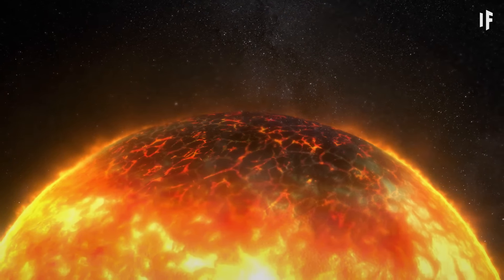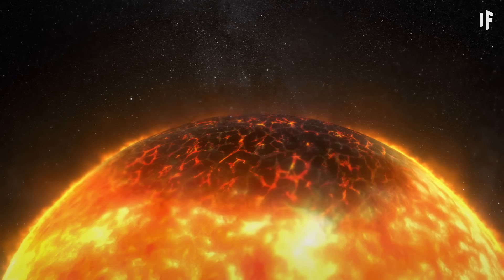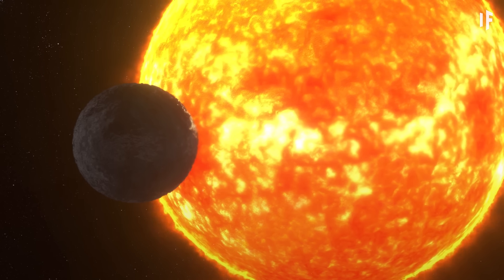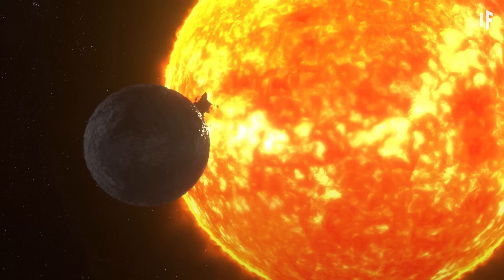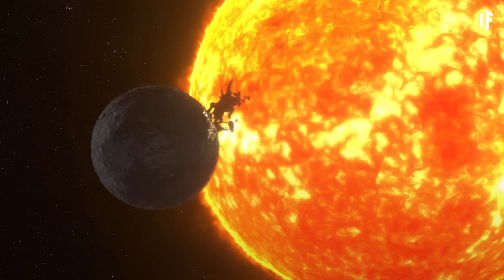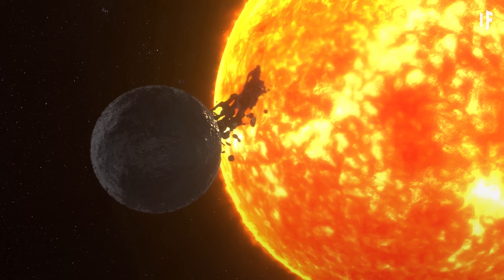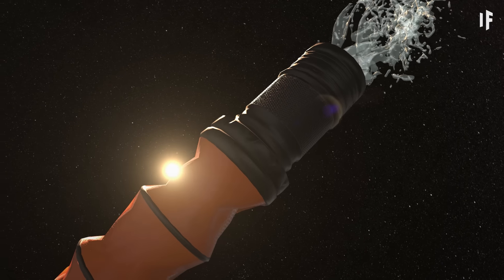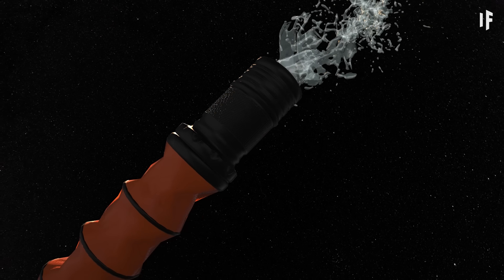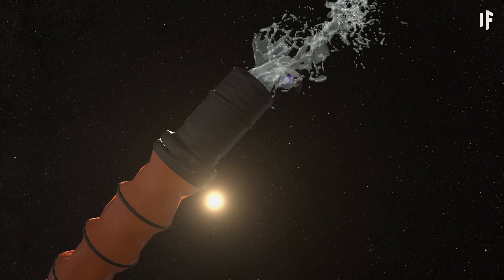But it wouldn't happen the way you might expect it to. If we were able to crash that water world into the Sun, the first problem would be the water freezing in space. Same thing would happen if we could pull out a gigantic fire hose with all of the Earth's water and aim it at our star.